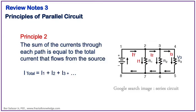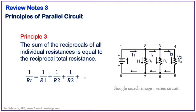The second principle in parallel circuit is all the current through each path is equal to total current flow from the source. We can say that the total current Ip is equal to I1 plus I2 plus I3 and so on.